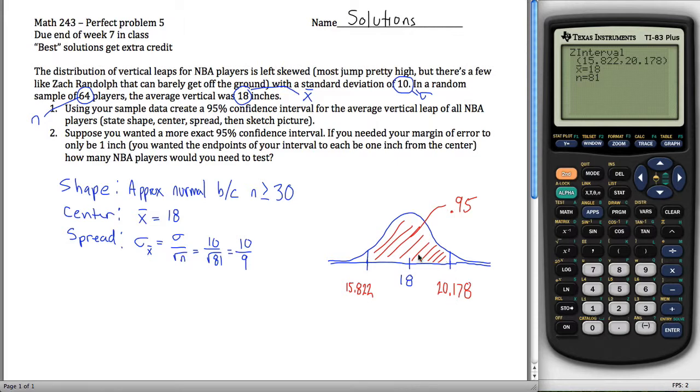You could also find those values using the inverse norm function, kind of the way we had been doing it, but since your calculator figures this out a lot easier for you, you might as well just leave it like this. I think this is a perfectly good picture, or you could say your confidence interval goes from 15.822 all the way up to 20.178.